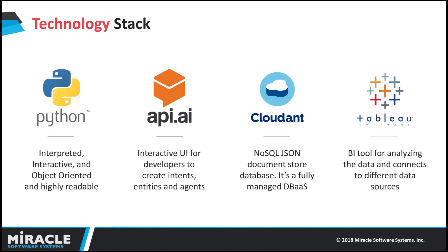Now I will talk about the technology stack that we have used in our application. Python is a high-level, interactive, object-oriented programming and scripting language. It is highly reliable and portable. It can run on a wide variety of hardware platforms and has a uniform interface on all platforms. API.ai is used for building our own conversational chatbots. It is a Google-owned developer tool for human-computer interaction, enabling natural language conversation. CouchDB is a NoSQL non-relational distributed database stored in JSON format. Here we use CouchDB for storing report images that are coming from Tableau.